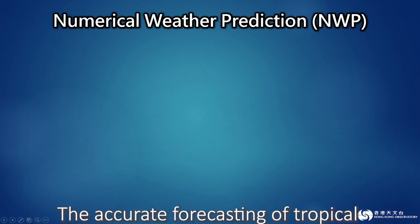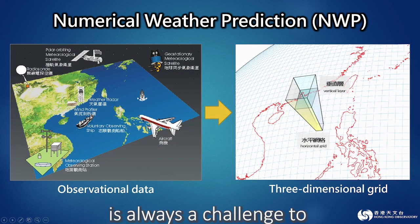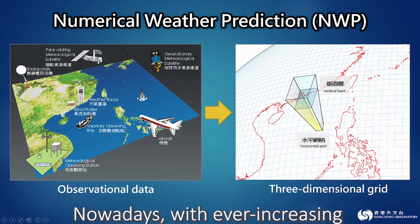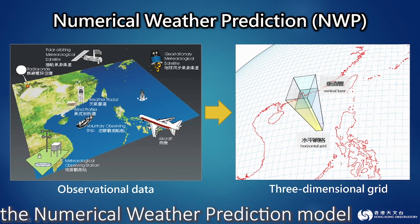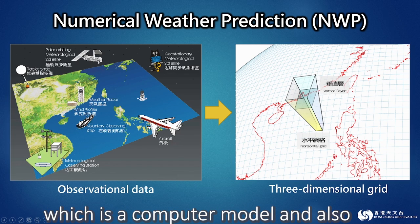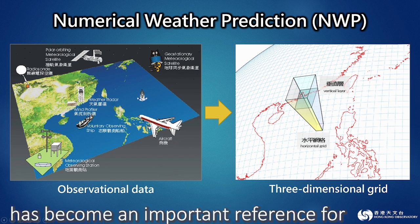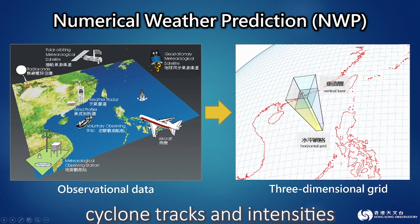The accurate forecasting of tropical cyclone tracks and intensities is always a challenge to all meteorological services. Nowadays, with ever-increasing computational power, the numerical weather prediction model — also known as NWP — has become an important reference for forecasters in predicting tropical cyclone tracks and intensities.